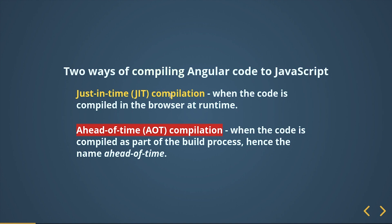JIT — Just-In-Time — compiler works at runtime, and AOT — Ahead-Of-Time — compiler works at build time. Just keep in mind that the JIT compiler works when the code is compiled in the browser at runtime, and Ahead-Of-Time compilation works when the code is compiled as part of the build process. It is mostly recommended by experts to use AOT compilation when deploying your project to a server.